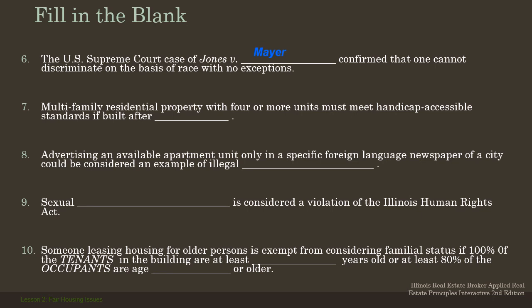Multi-family residential property with four or more units must meet handicapped-accessible standards if built after 1991 — that's the Americans with Disabilities Act. That's when the public accommodations part of that act was put into effect. You don't necessarily have to know the year 1991, but you do want to know the Americans with Disabilities Act.